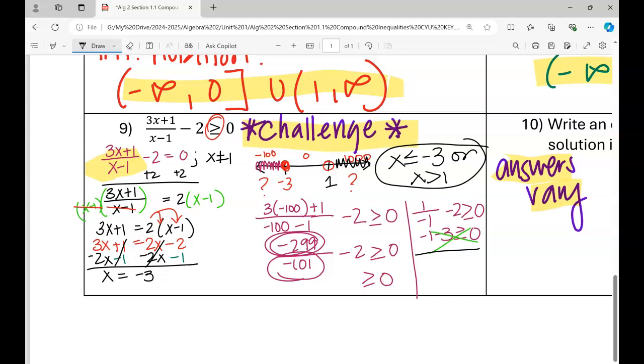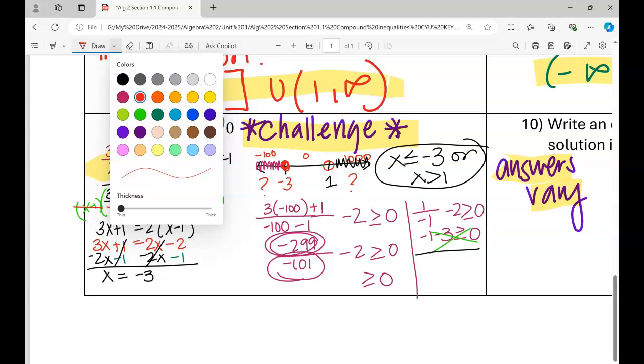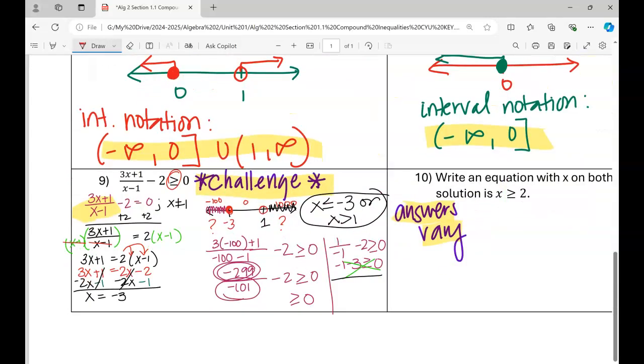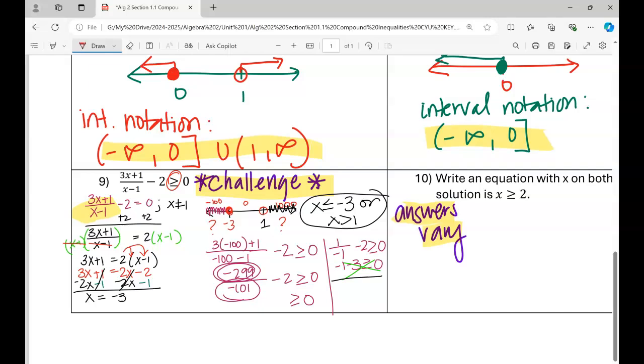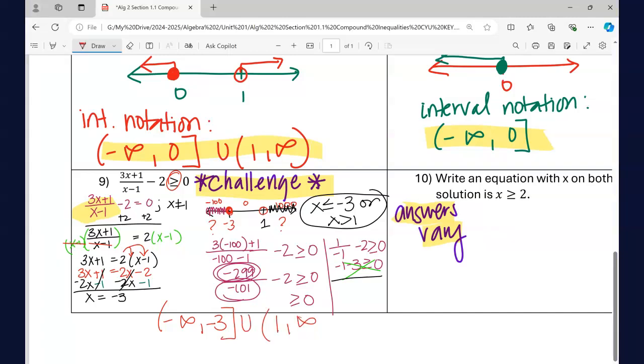Now, if you want interval notation, let me get a different color. So interval notation, for those of you who are interested, is going to look like this. Negative infinity to negative 3. We are going to have a bracket, union, parentheses, 1 to infinity, just like that.